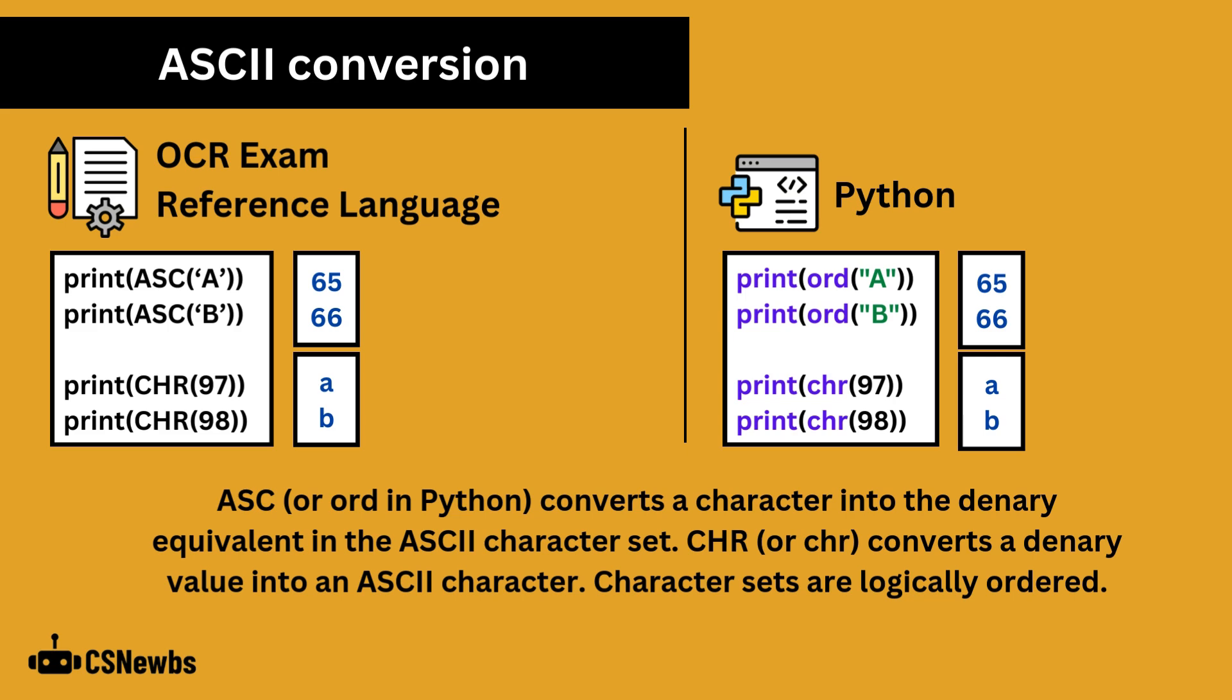Character sets are logically ordered, so printing ASC or ord in capital C would return 67, and printing CHR 99 would print lowercase c. You do not need to know any ASCII values for the exam.